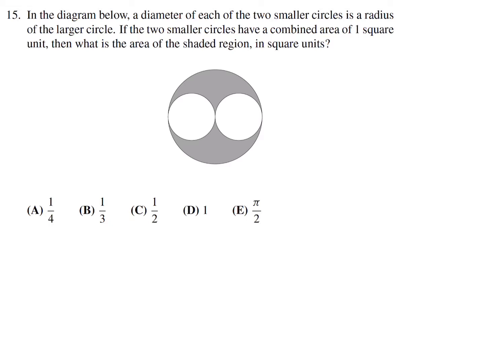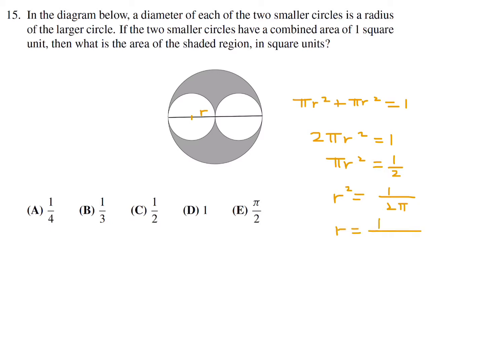A diameter of each of the two small circles is a radius of the larger circle. If the two smaller circles have a combined area of 1 square unit, what is the area of the shaded region? Drawing a line across, r is the radius of a small circle. So πr² + πr² = 1, meaning 2πr² = 1, so πr² = 1/2, and r² = 1/(2π).